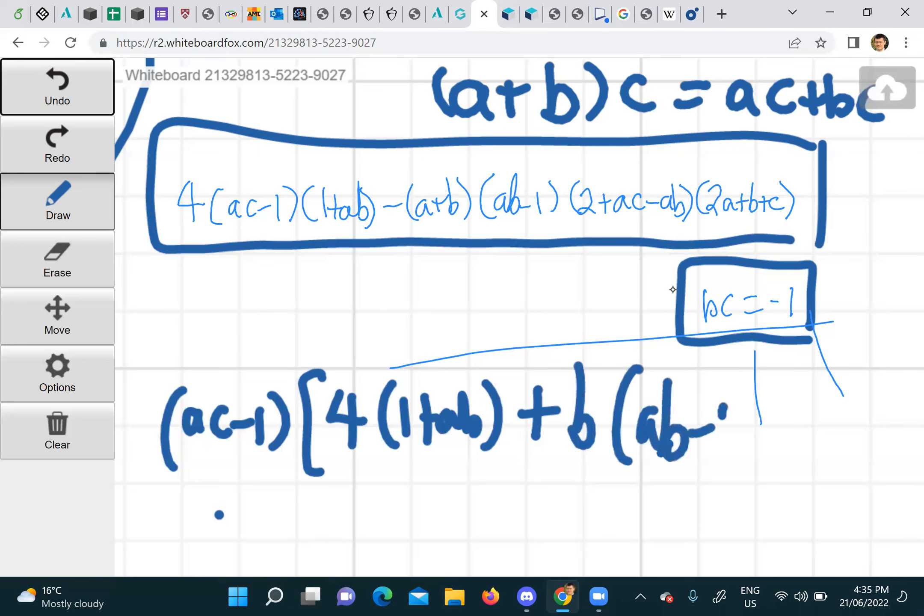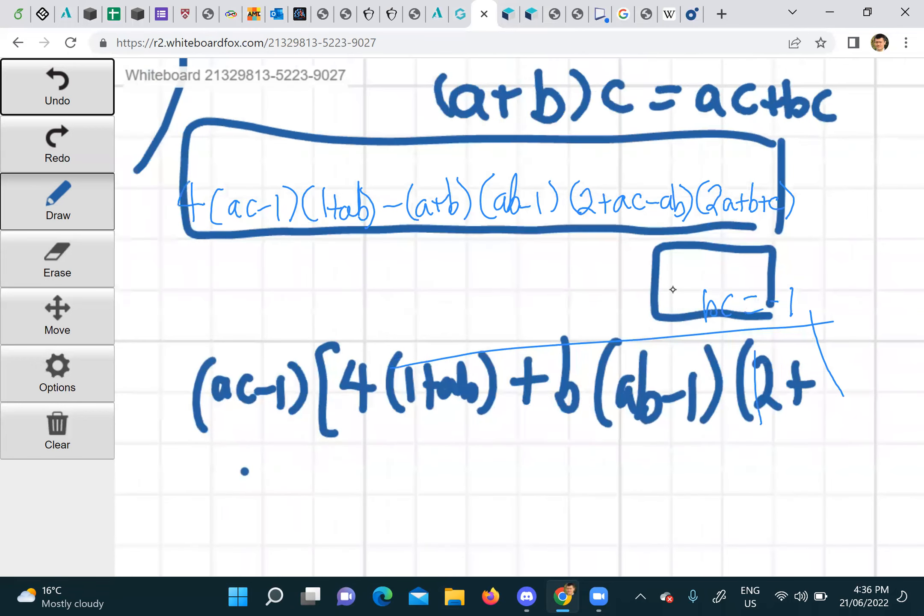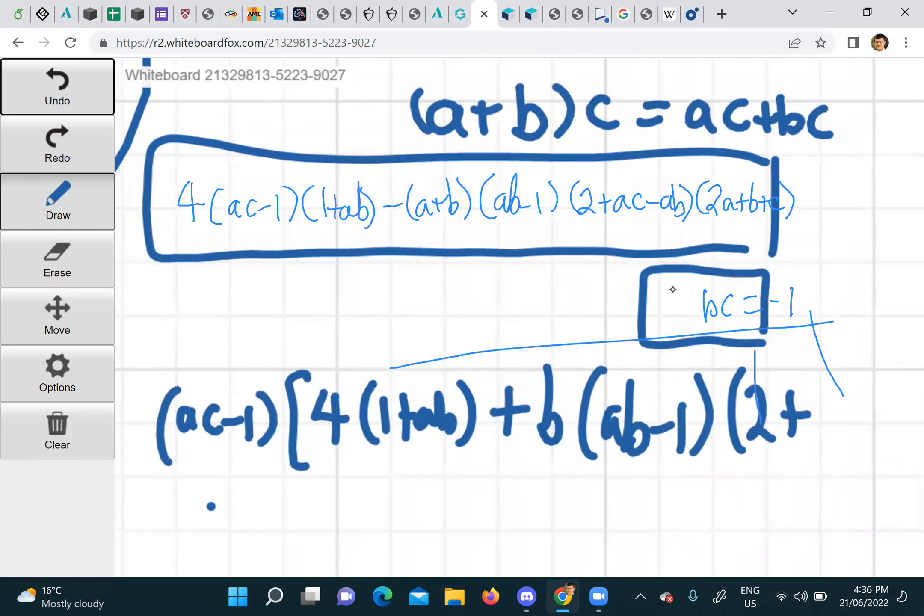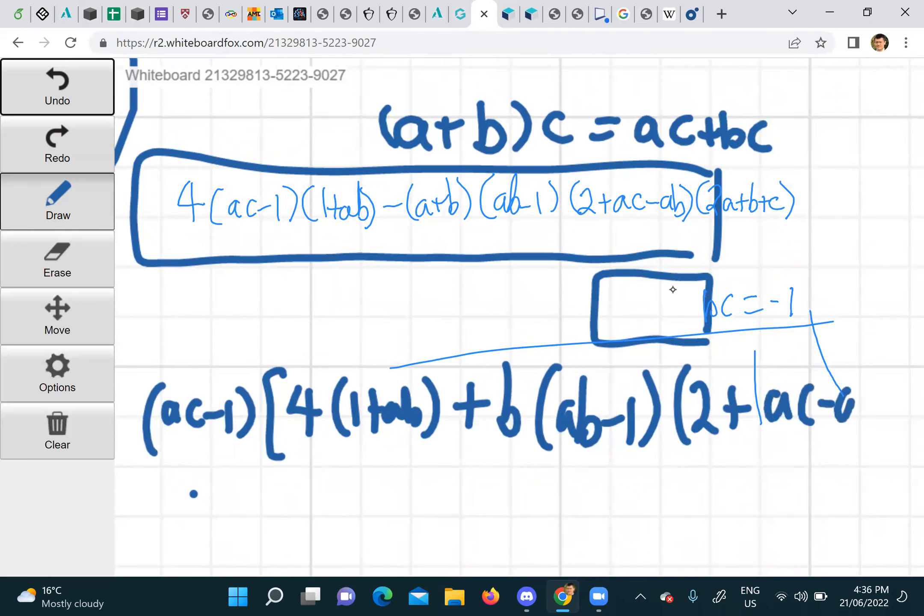So (ab)(ab - 1) times... oh it's kind of... I'll just write the rest: 2 plus ac minus ab.